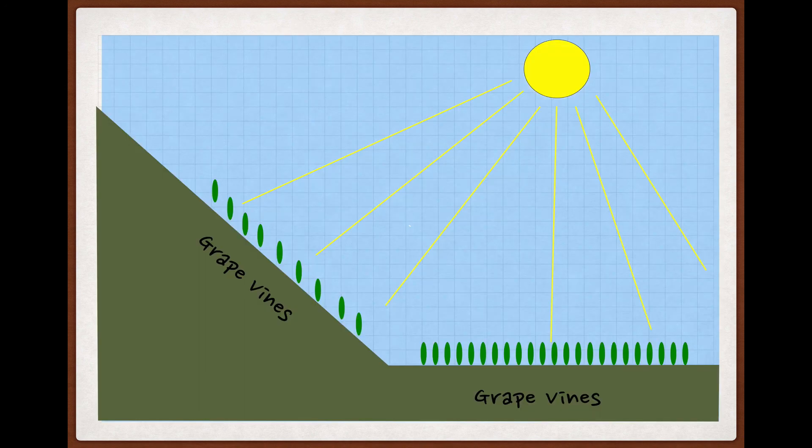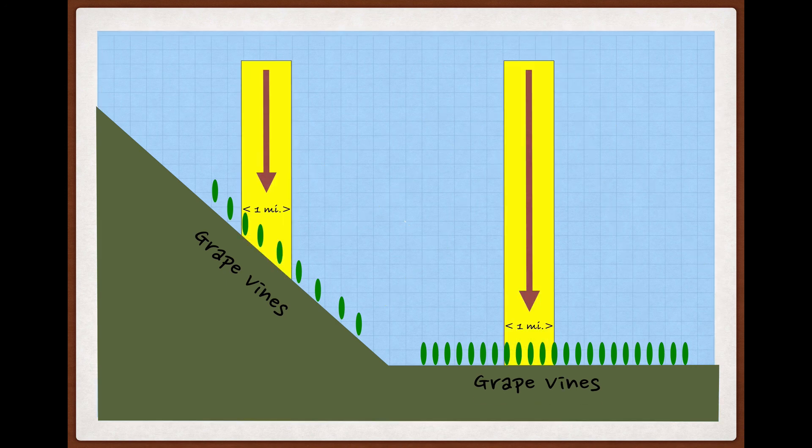So if we go back to our imaginary wine region with its sloped and flat vineyards, you can see that when the sun is highest in the sky, the very beginning of summer, all the grapes will be getting roughly equally concentrated amounts of radiant energy from the sun. Yes, the slide is exaggerated for simplicity.